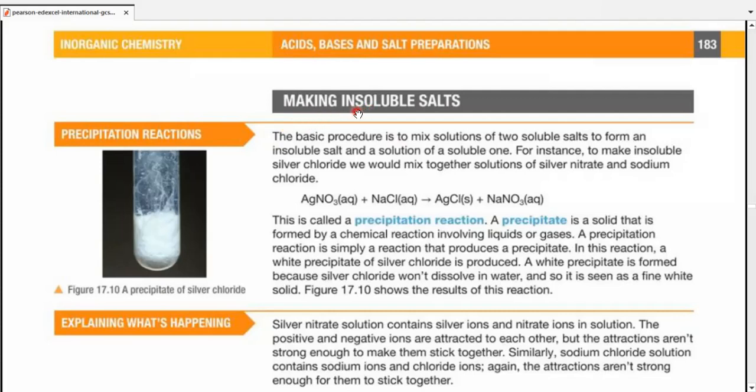Making insoluble salts or precipitation. The basic procedure is to mix two soluble salts, which gives us an insoluble salt and a soluble one. For example, we are mixing silver nitrate and sodium chloride. Both are soluble salts. What it gives us is an insoluble salt, as you can see the solid sign, and a soluble salt. Sodium nitrate is soluble, that's why the aqueous sign.